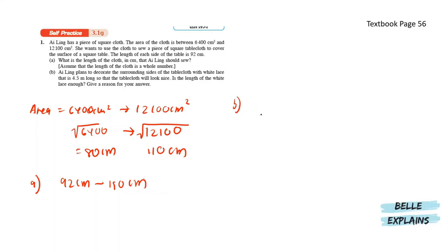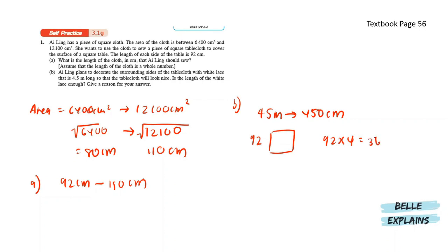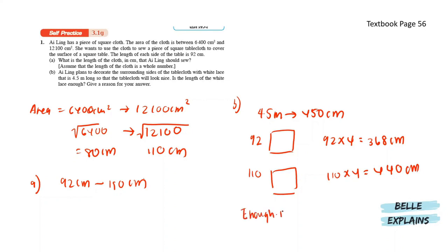Next for B, Eileen plans to decorate the surrounding sides of the table cloth with white lace that is 4.5 meters long. So we have 4.5 meters which is actually 450 cm. Is the length of the white lace enough? The minimum length of each side is 92 cm, so for a square table cloth, 92 times 4 gives us 368 cm. For the maximum which is 110, 110 times 4 gives 440 cm. Since we have 450 cm of lace, if Eileen uses 110 cm per side she will only need 440 cm. So the total amount of lace is enough because the maximum amount of lace needed is 440 cm, which is 4.4 meters.